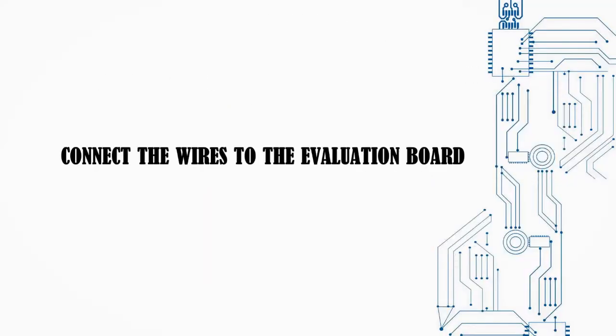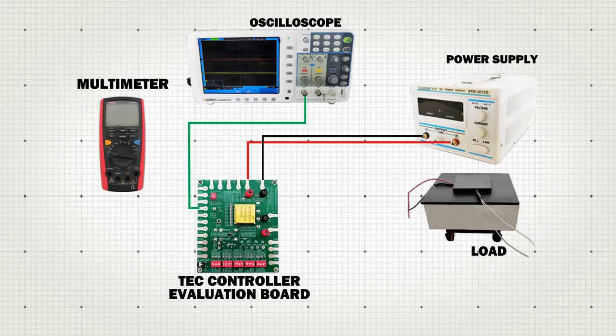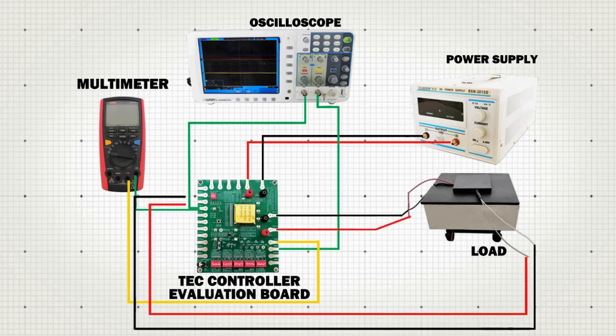Connect the wires to the evaluation board. Connect the power supply, oscilloscope, multimeter, and load to the corresponding pins of the evaluation board.